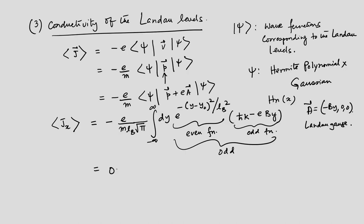Now that makes us wonder: if the conductivity of the Landau levels is zero, then how does the Hall conductivity arise? That question will be answered later, but in general the Landau levels do not have any conductivity and cannot conduct because of their flatness.